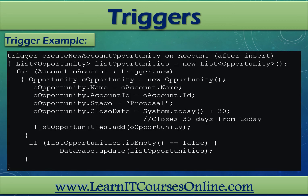Now let's review another trigger: this one generates an Opportunity from an Account that was just created. Because we needed the Account ID to do this, we needed to use an after trigger. We also borrowed some values from the Account itself to help populate the required fields on the Opportunity, without querying for those values.